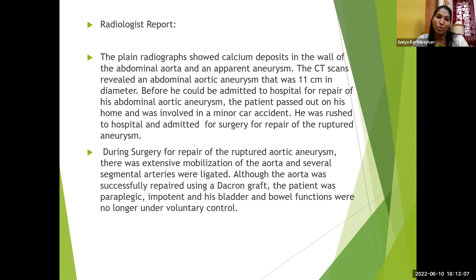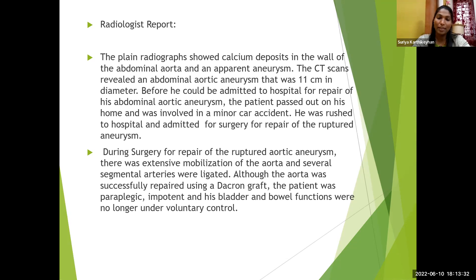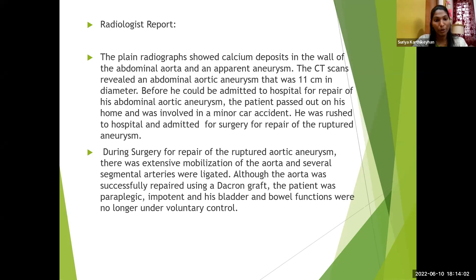He was also involved in a minor car accident. Whenever the examiner sets a question, he complicates it more — they gave a heavy drinker and smoker old man, then aneurysmal rupture, then a minor car accident. He was rushed to the hospital and admitted for surgery for repair of the ruptured aneurysm. During surgery, there was extensive mobilization of aorta and several segmental arteries were ligated. Although the aorta was successfully repaired using a Dacron graft, the patient became paraplegic.